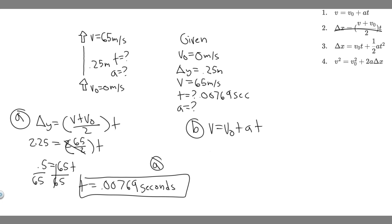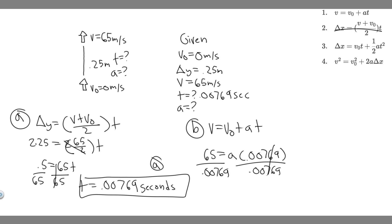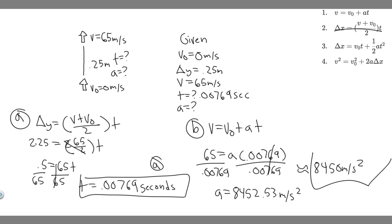Plugging in: V is 65, which equals V₀ (which is 0, so we can ignore it) plus A times T, which is 0.00769. Solving for A, we divide both sides by 0.00769. So A equals 65 divided by 0.00769, which gives A equal to 8452.53. The units are meters per second squared. You can round this to 8450 meters per second squared — however your teacher wants you to round. So approximately 8,450 meters per second squared is the acceleration. This is your answer to Part B.